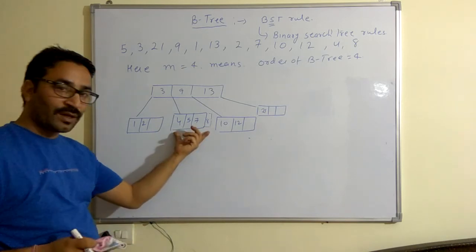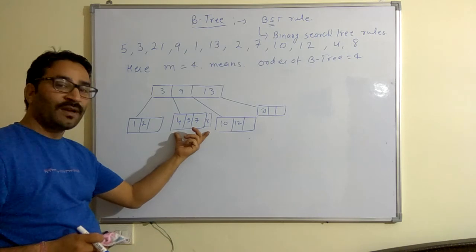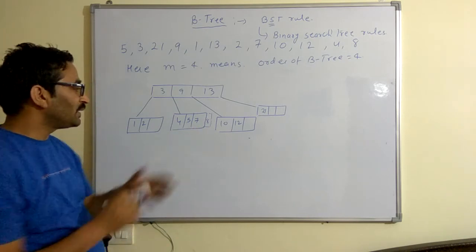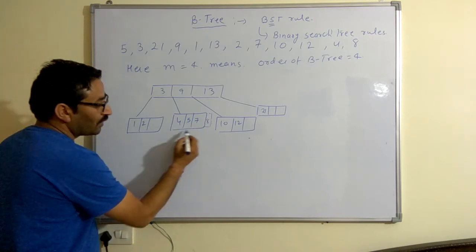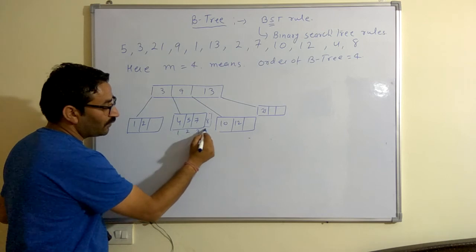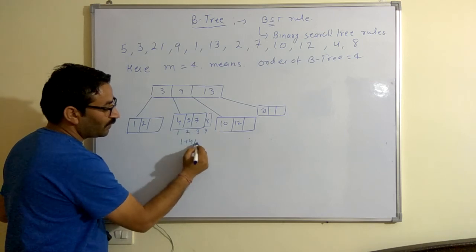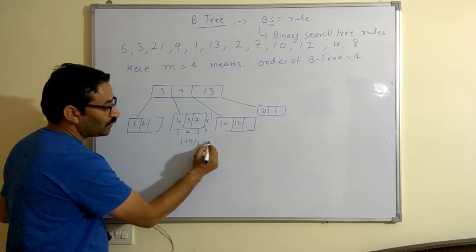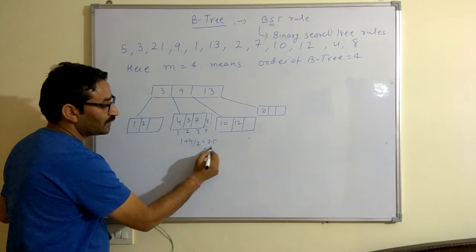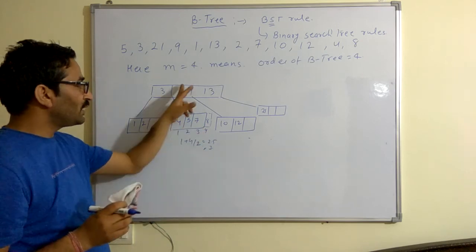So 1 plus 4 divided by 2 is equal to 2.5, meaning 3. So the third value is 7 on both sides.